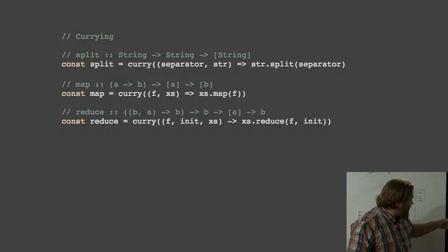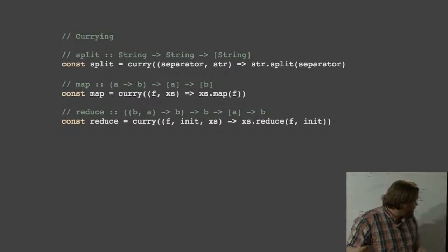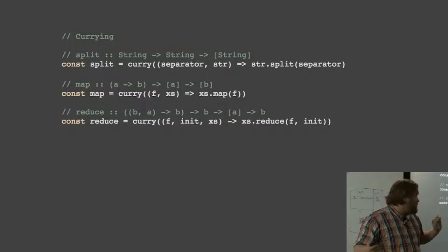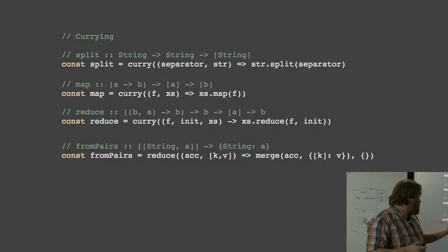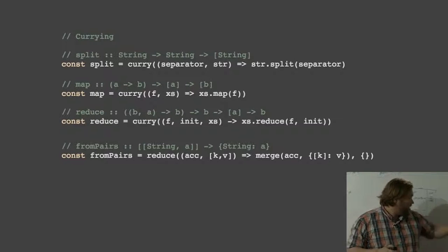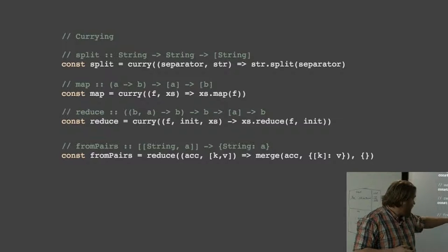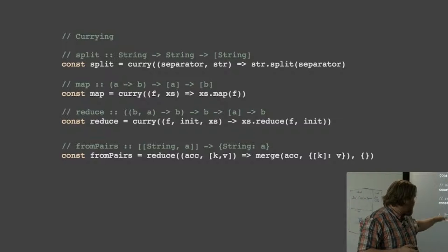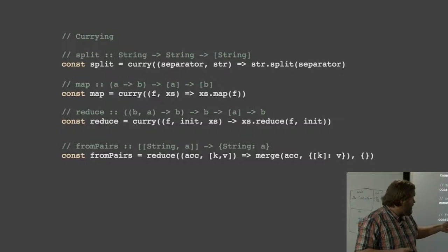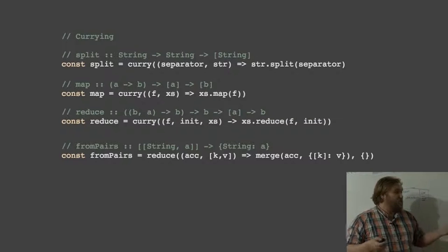Once we start currying our multivariate argument functions, we can start creating new functions very simply based on the original ones. These should all be fairly familiar. Map and reduce are quite common functions. Split, as we said, we just defined. And because we curried our reduce function and ordered the arguments the way we do, we can actually partially apply that. We can actually build our fromPairs function just by passing two of the arguments to reduce. So the function fromPairs just got a lot simpler because it's just partially applying it to reduce.